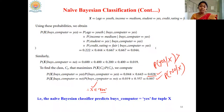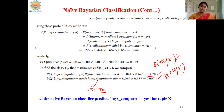If the assumption holds true — that attributes are independent of each other — there is no problem with Naïve Bayes classification. But in general, dependencies may exist among the attributes of a dataset. In such cases, we need to go for the Bayesian belief network classifier, which assumes that there exists a dependency among the attributes.